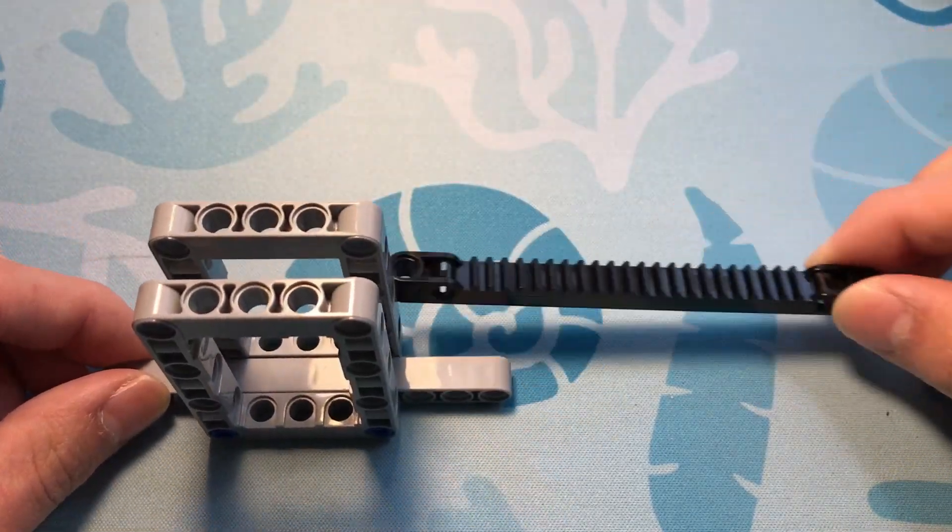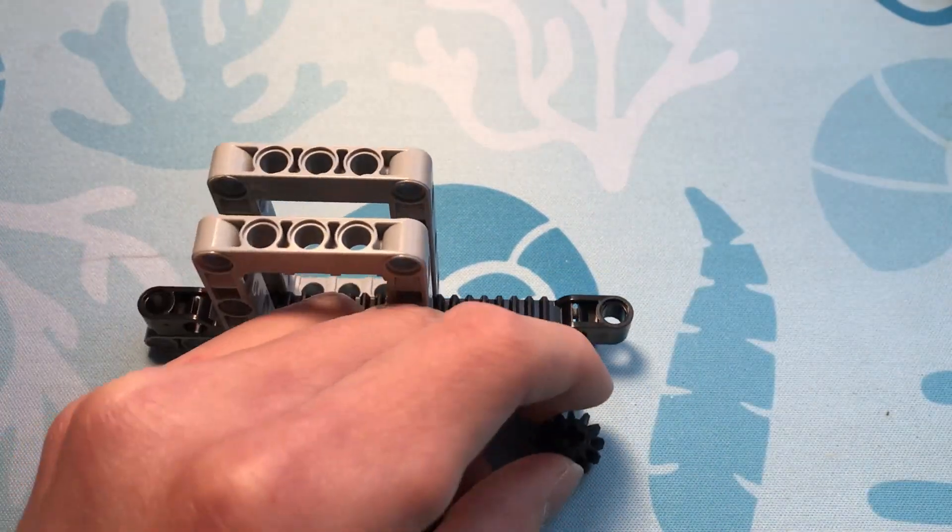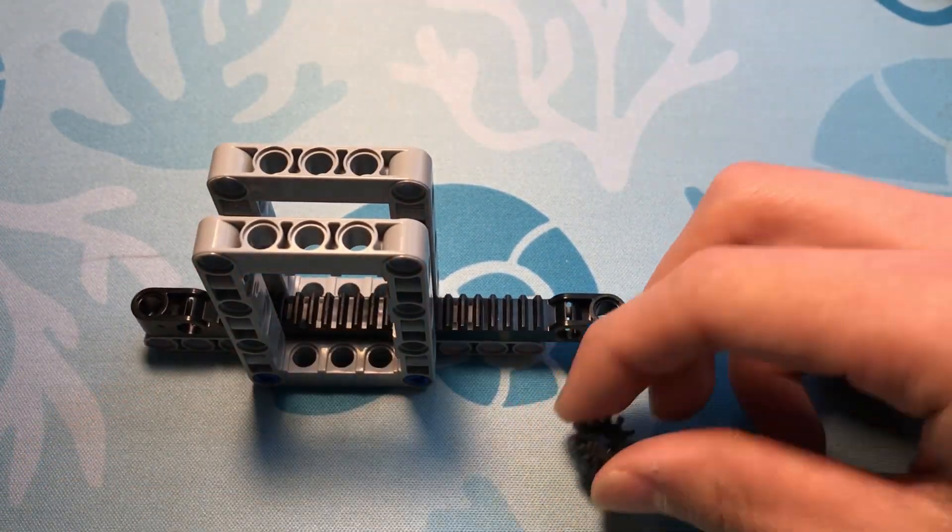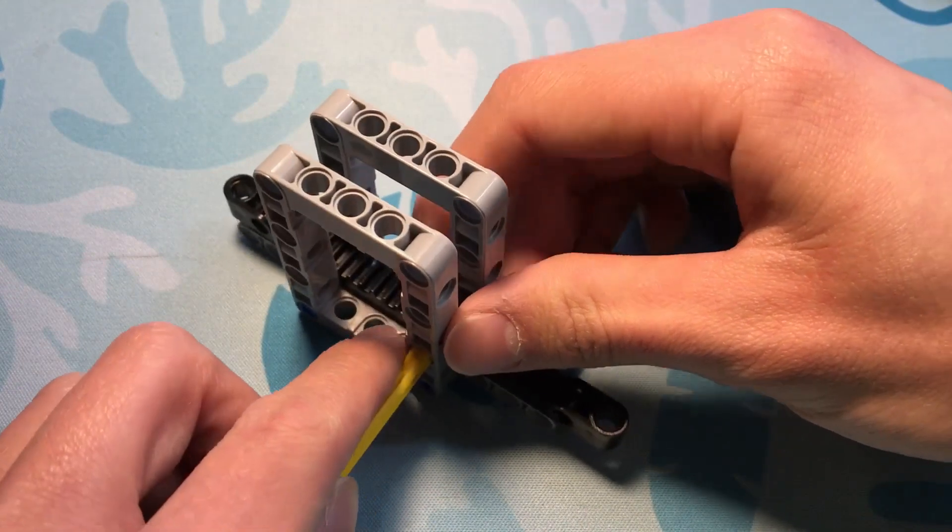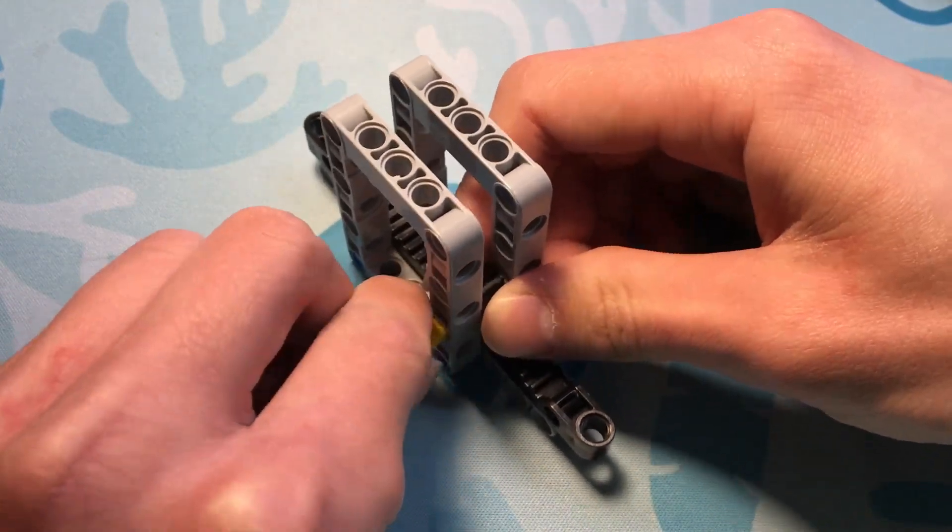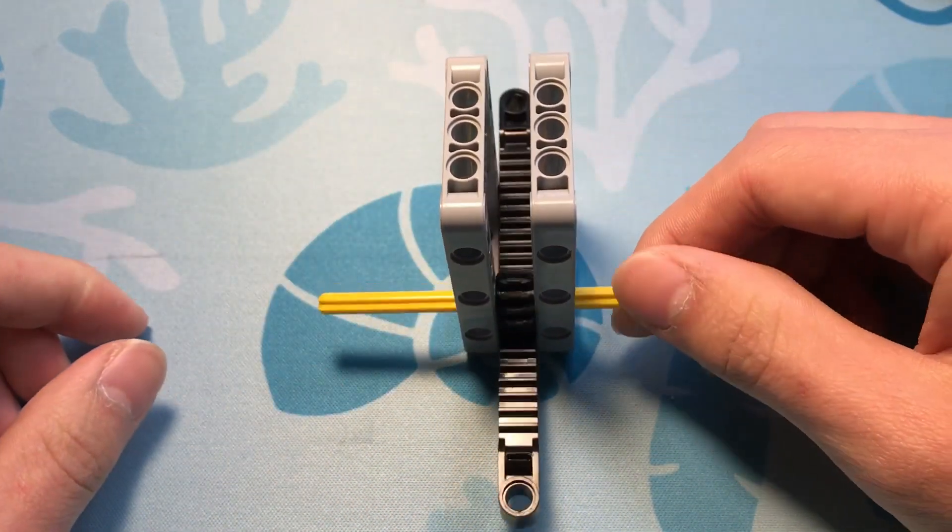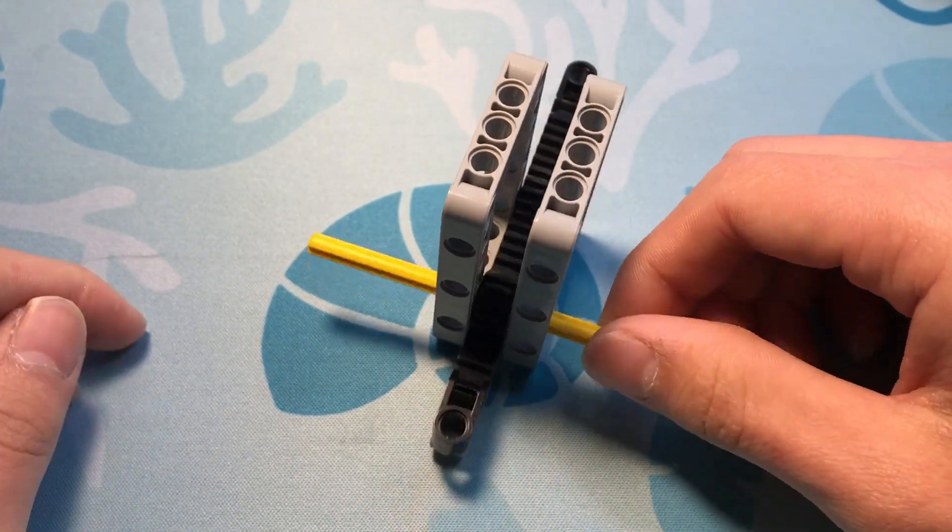And like before, we'll take our 12 tooth gear and put an axle through it like this. So that when we spin the axle, the rack piece moves.